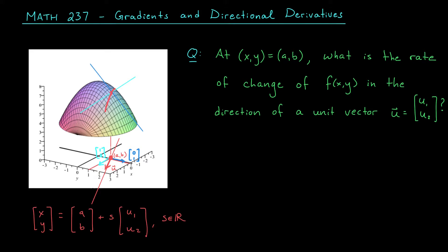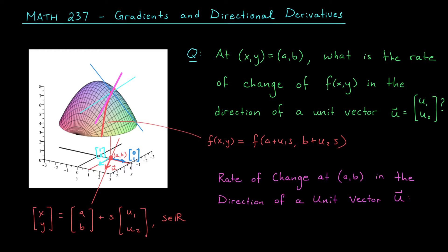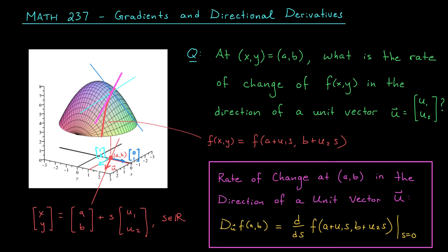The values of our function as we move along this red line are given by f(x,y) = f(a + u₁s, b + u₂s). These are the values of x and y on our line. We're now dealing with a function of just one variable, s, and we're asking for the derivative of that function at the point (a,b), which is where s equals zero. This gives us a way to describe our rate of change. The rate of change we're asking for is really the derivative of the single-variable function f(a + u₁s, b + u₂s) when s equals zero. We denote this quantity by D_u f at (a,b), which we refer to as the directional derivative of f in the direction of the unit vector u. Using a unit vector here is super important.